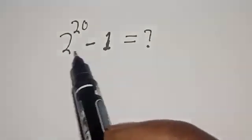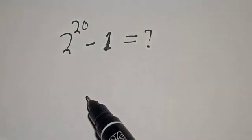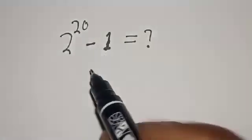Hello, welcome to Mathfocus. 2 raised to power 20 minus 1 is unknown. Let's find the value of 2^20 - 1.